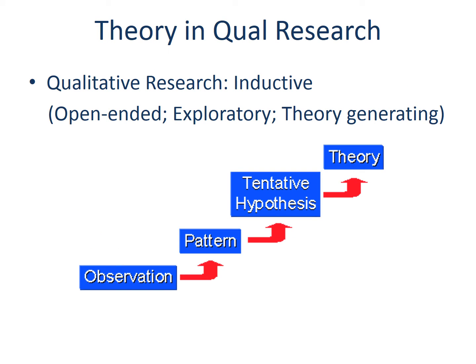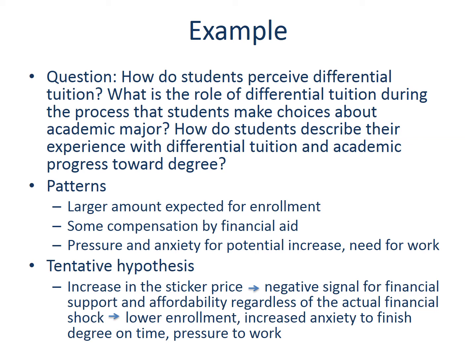In qualitative research, theory is something that is generated from the observation and interpretation of individual cases. If we study the same problem from a qualitative perspective, we would pursue research questions focused on students' perceptions of the policy and their relevant experiences. Let's assume we collected data by interviewing students in programs that charge differential tuition. We would then identify distinctive patterns from the data and create a tentative hypothesis — for example, that an increase in sticker price functions as a negative signal about support and affordability, leading to lower enrollment in lucrative majors, increased anxiety to finish the degree on time, and pressure to work while in college.